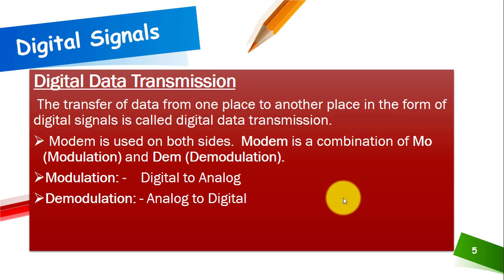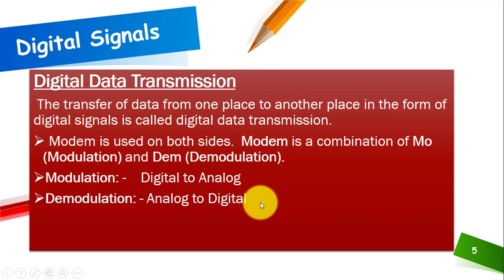The transfer of data from one place to another in the form of a digital signal is called digital data transmission. A classic example is the modem, which is basically the combination of two mechanisms: modulation and demodulation. MO stands for modulation and DEM stands for demodulation. Modulation is the conversion of digital to analog signal, and demodulation is the conversion of analog to digital. So basically, the modem handles the conversion between digital and analog signals.